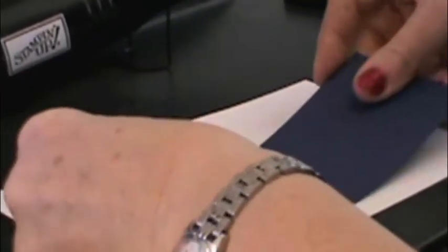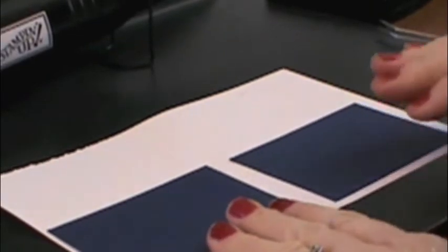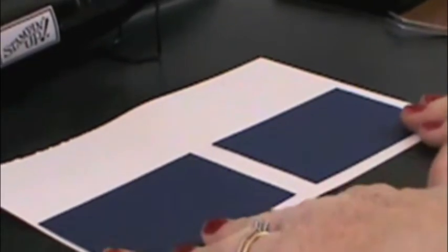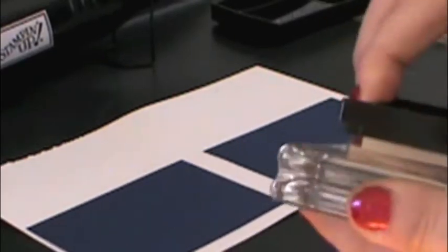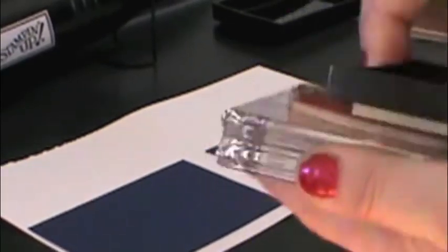Today I'm just going to show you the 101 Stamper Spot on heat embossing. So we have bits of paper here, cardstock in Knight of Navy, and I'm just going to actually put buffaloes onto them.